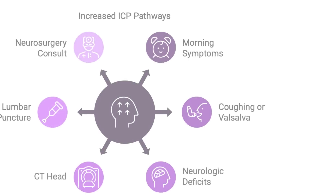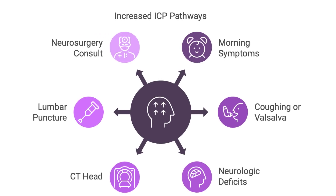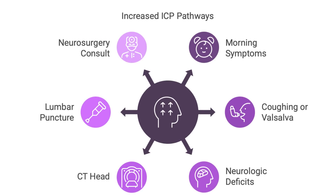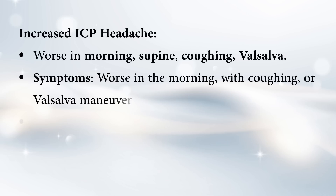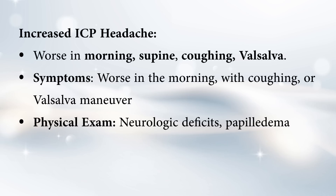The next one is headaches from increased intracranial pressure, or ICP. These often follow a pattern: they tend to be worse in the morning when you're lying down — what's called supine — and they get worse when you do things that increase the pressure in your head, like coughing or doing the Valsalva maneuver, which is when you try to breathe out forcefully while closing your airway, like when you strain during a bowel movement.